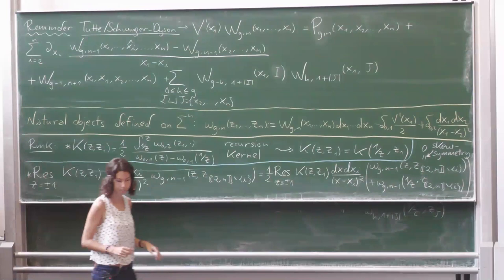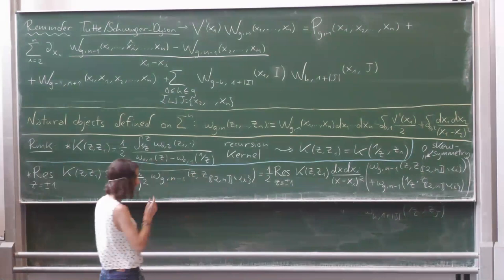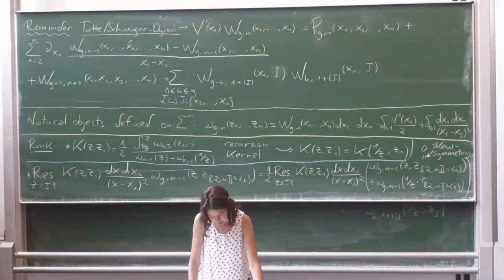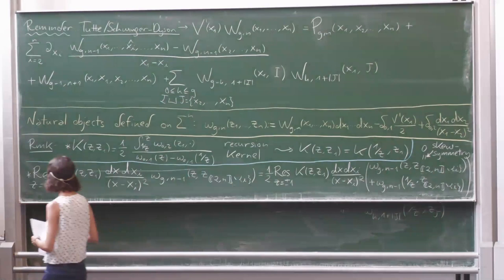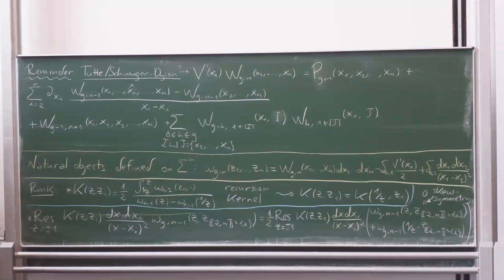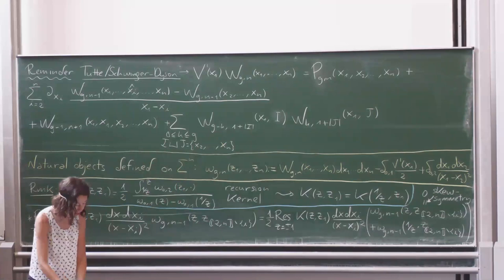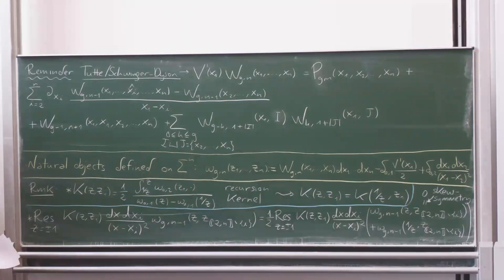Good morning. Yesterday I prepared some manual slides to finish the technical details of the proof that we had started, so we will start with that. First, a reminder of the Tad's recursion that we had found in the Schwinger-Dyson equations of the loop model — we could see it from two different perspectives. We had this first term equal to a polynomial, and the rest of the terms from removing an edge in all possible ways.